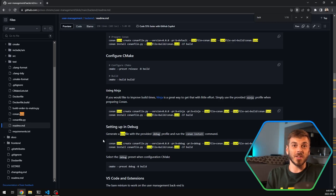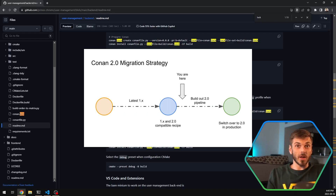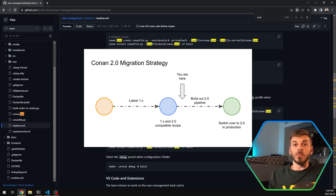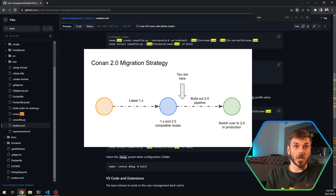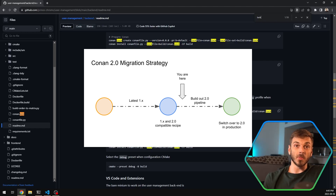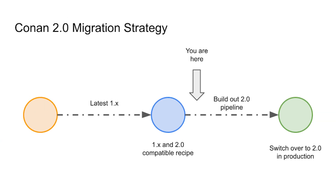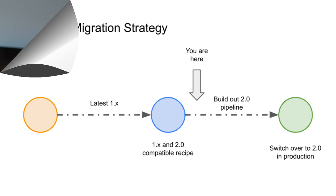Before we dive in, we have some housekeeping. One of the questions I got asked was: what is the migration strategy? Generally, you want to get onto the latest Conan 1.x standards and best practices, use those new generators, and reach a point where your recipe is compatible with both 1.x and 2.0 — which we just finished in the last few episodes. The last step is to build our Conan 2.0 pipeline, and that's what we're starting today with lock files.